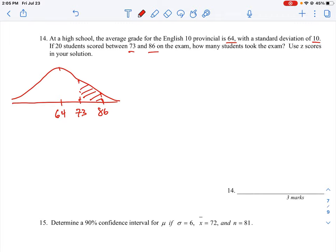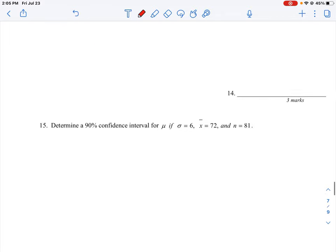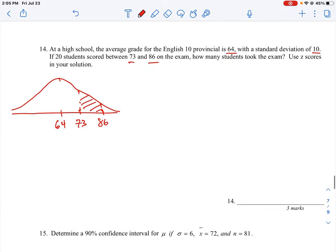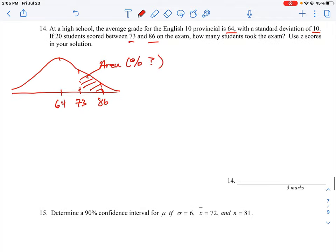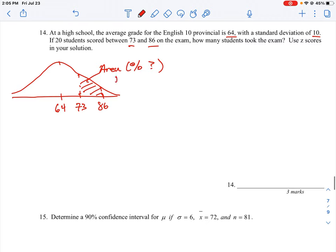This area here, this percent of that area, is representative of 20 students. So we don't know what this area is here. This is the area, this is the percentage. We don't know what that is yet, but we know that this represents 20 students.